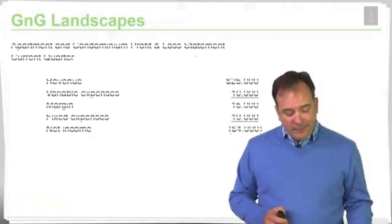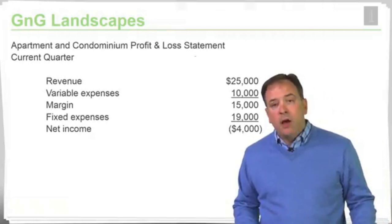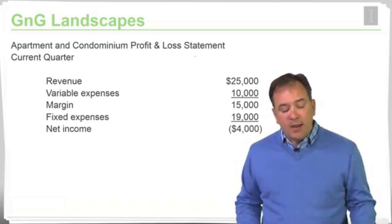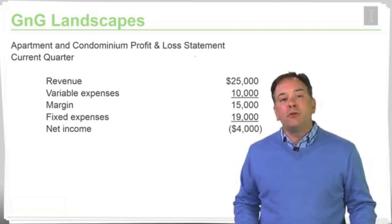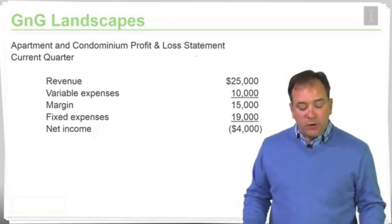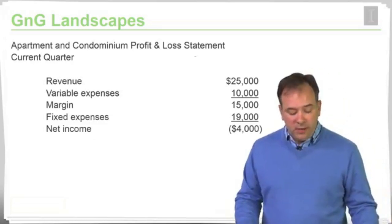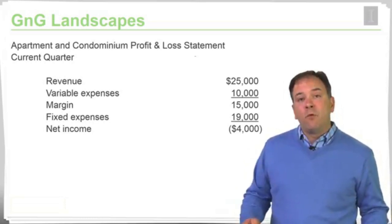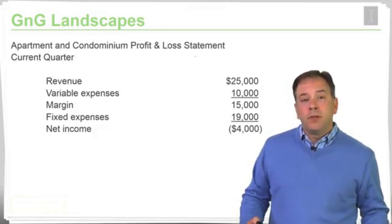Taking a look at this statement, we can see for the current quarter revenues for this product line are $25,000. The variable expenses, made up of a variety of different costs, amount to $10,000. That means that the contribution margin is $15,000. Fixed expenses currently being allocated to the apartment and condominium line amount to $19,000 and so therefore the reported net income for this product line is $4,000 to the negative. So Scott is indeed right, per this report they're losing money.